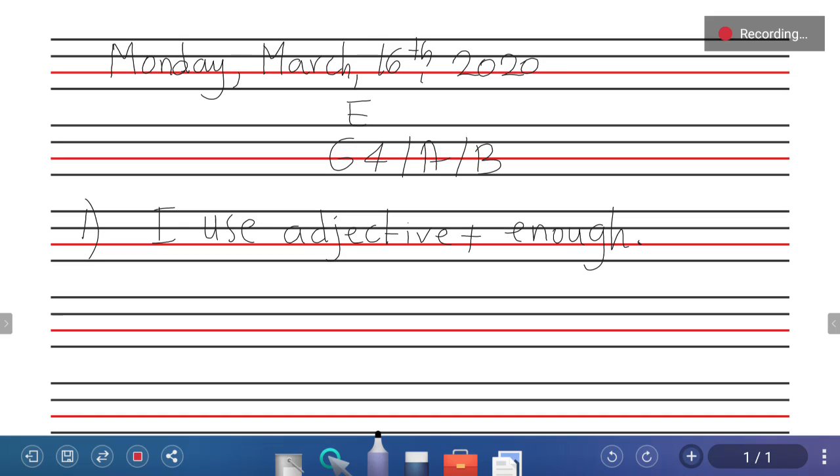For example, first of all let's have a list of adjectives. Let's say full, pink, fair, fair, small. This adjective plus enough.